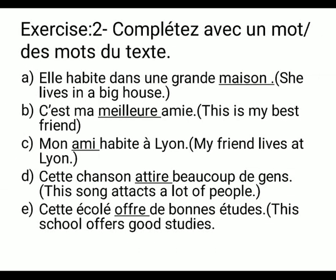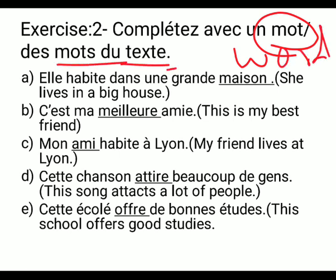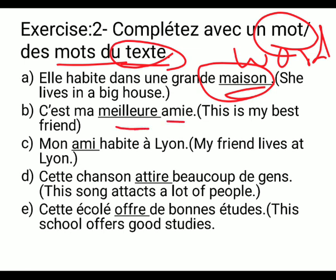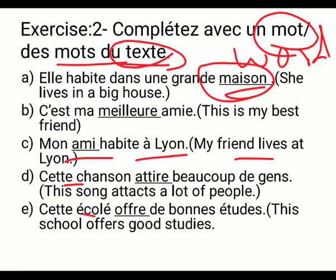Now exercise number 2: complete with the word or words from the text we have done in the chapter. 'Elle habite dans une grande maison' — she lives in a big house. 'Maison' means house. 'C'est ma meilleure amie' — this is my best friend. 'Mon ami habite à Lyon.' 'C'est chassé' — means it attracts a lot of people. 'Ça offre de bonnes études' means it offers good studies.